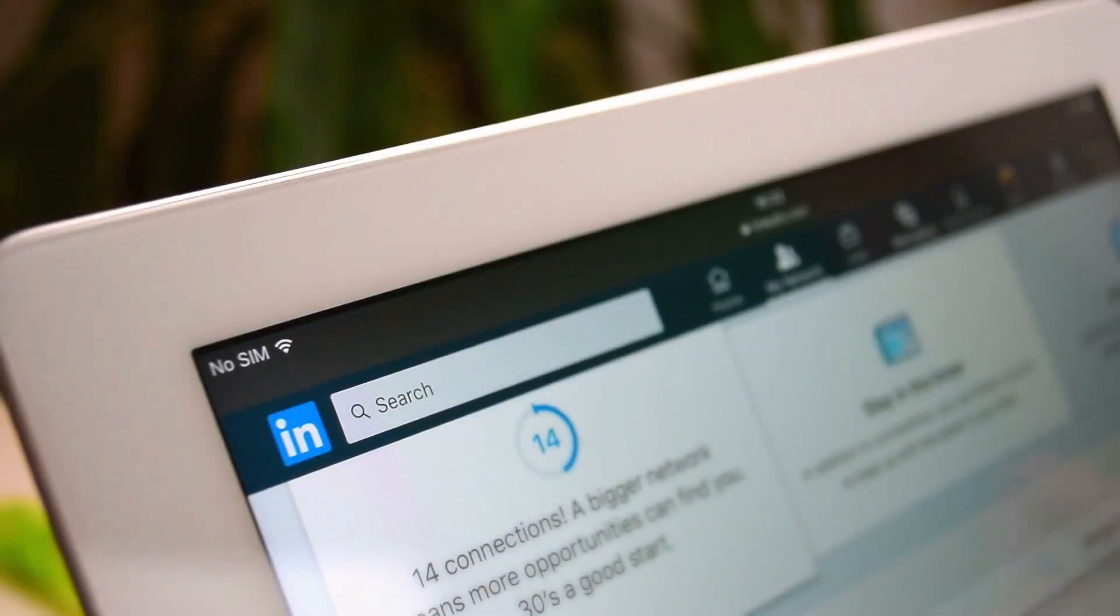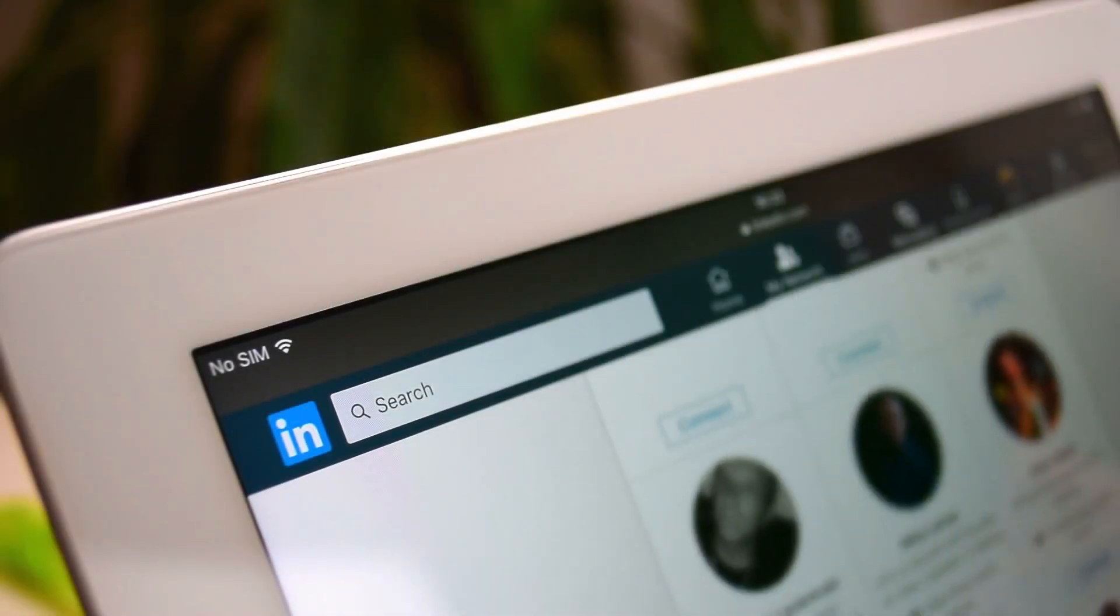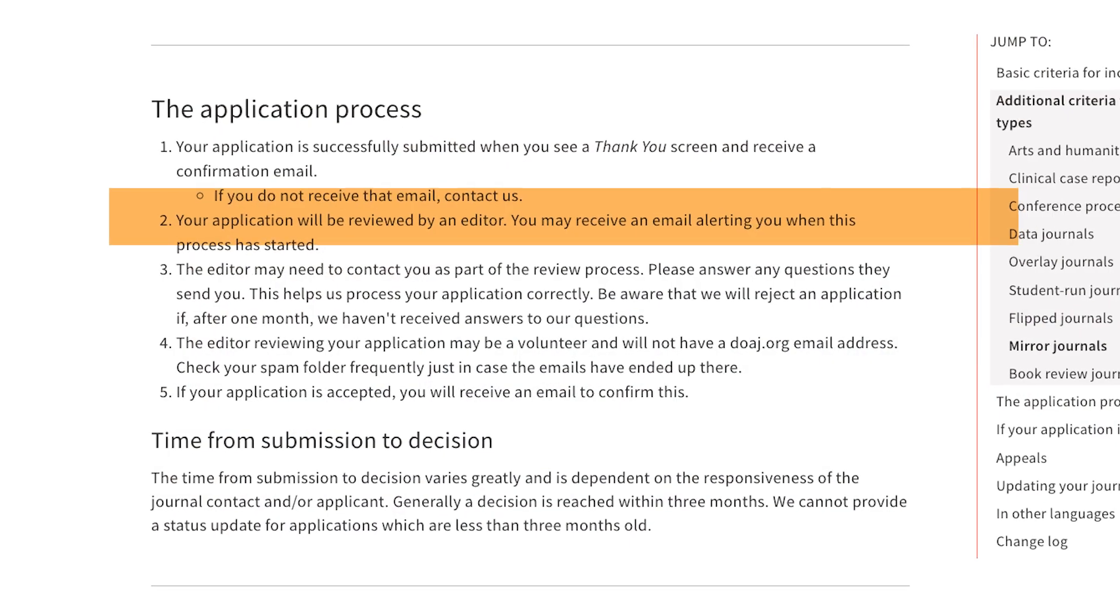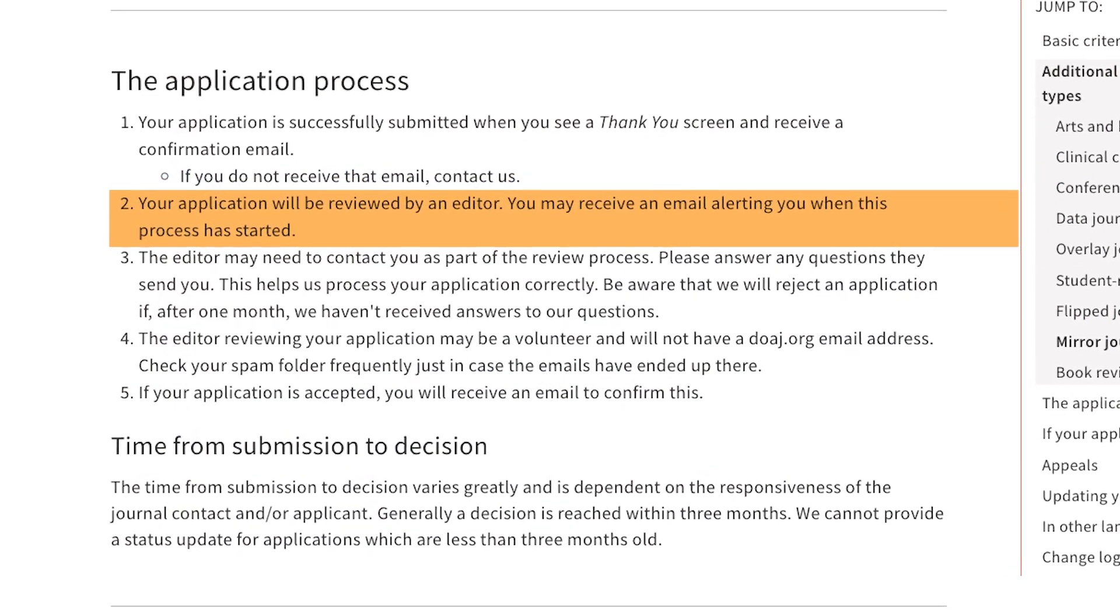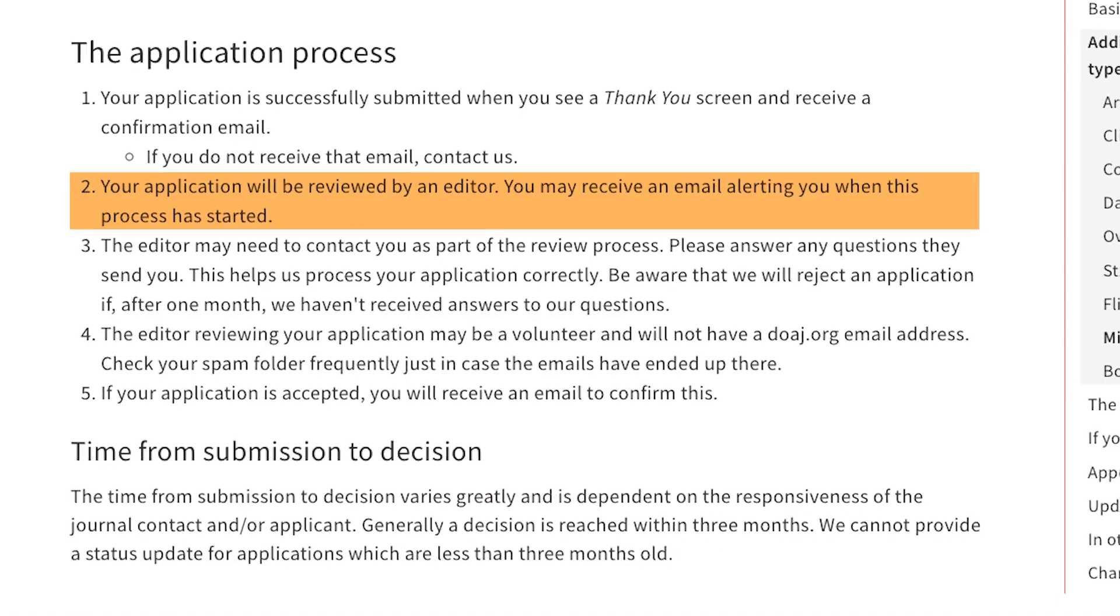Verify the contact information provided by the journal. Research the credentials of the editorial board members and ensure the presence of renowned scientists. Look for a clear peer review policy and regular publications of issues. Analyze past issues to see if the published articles align with the journal's focus and are of high quality.